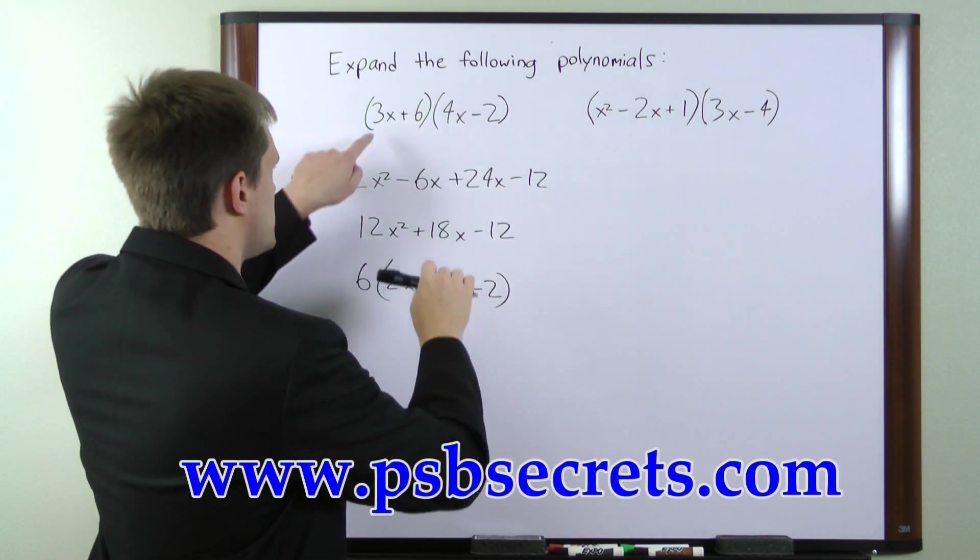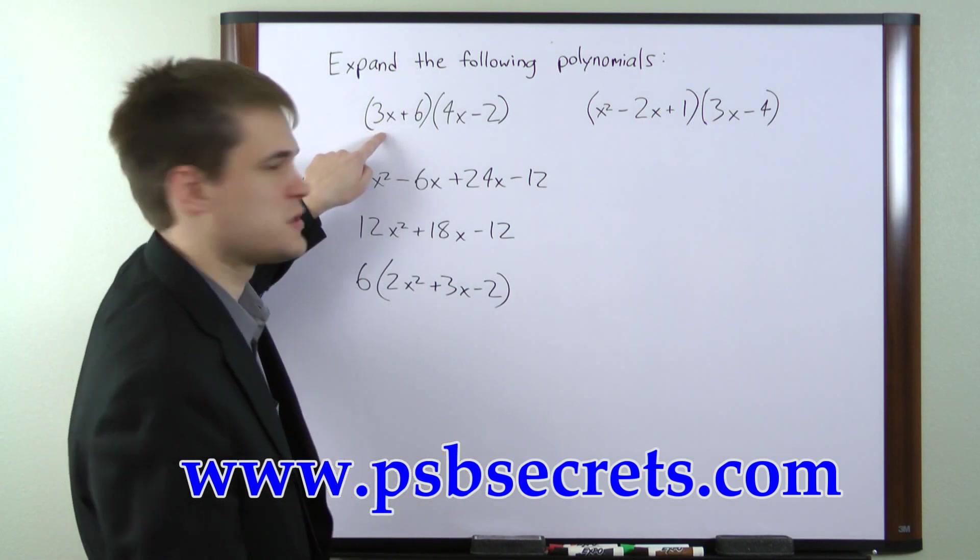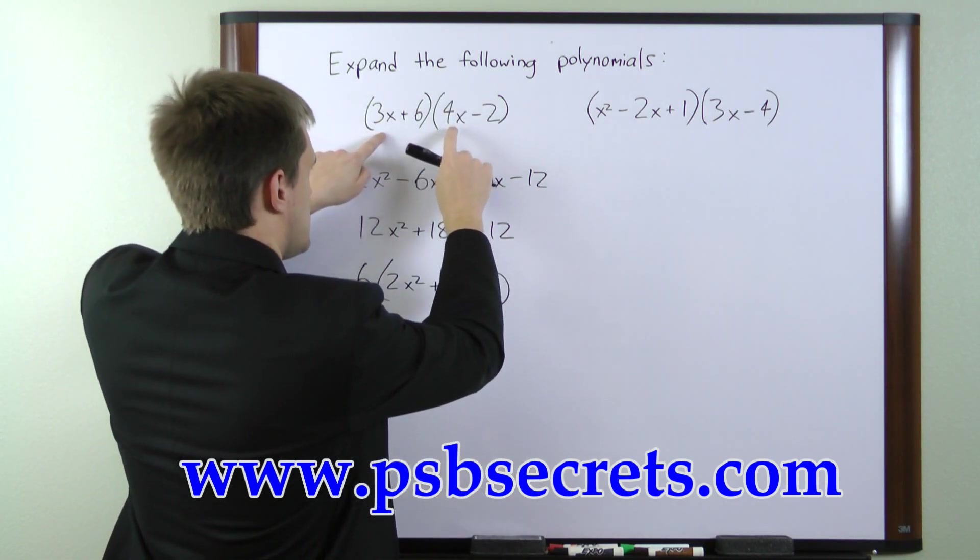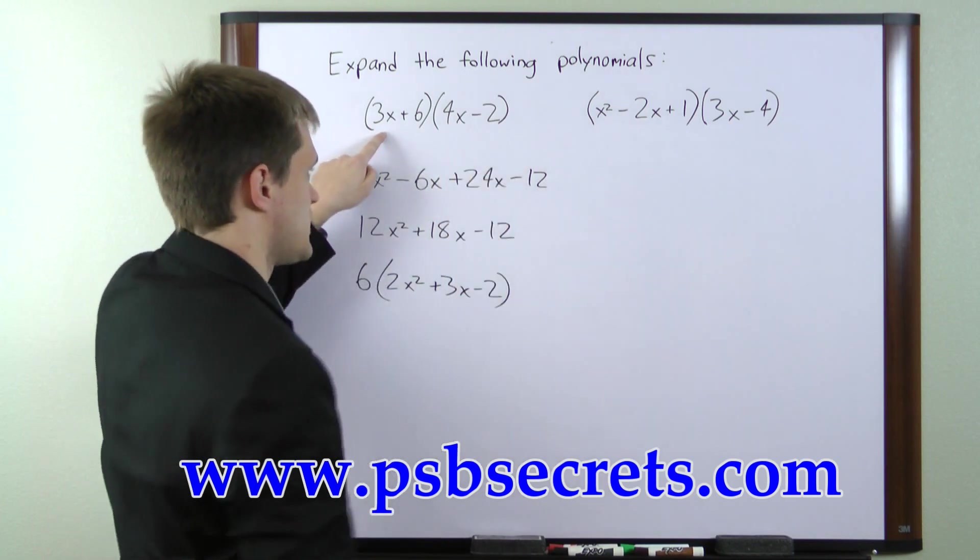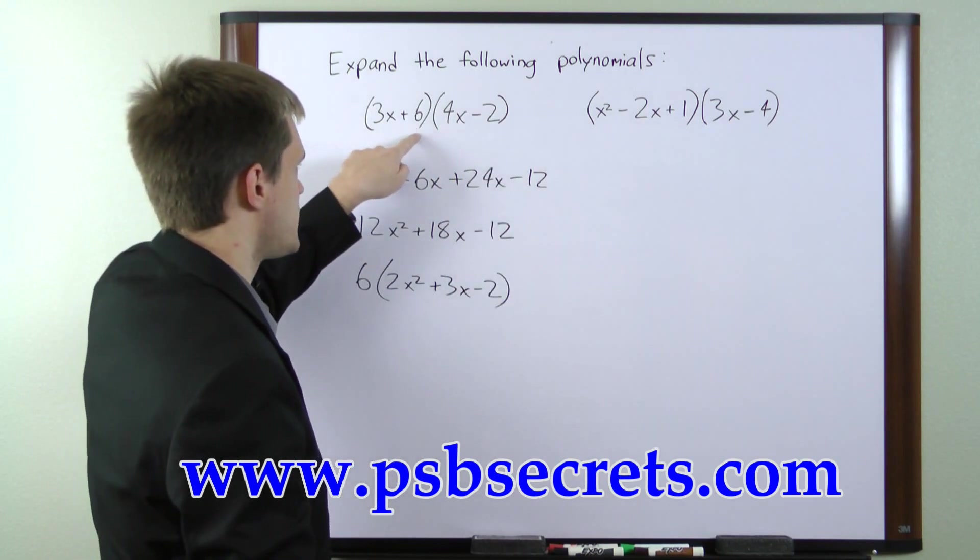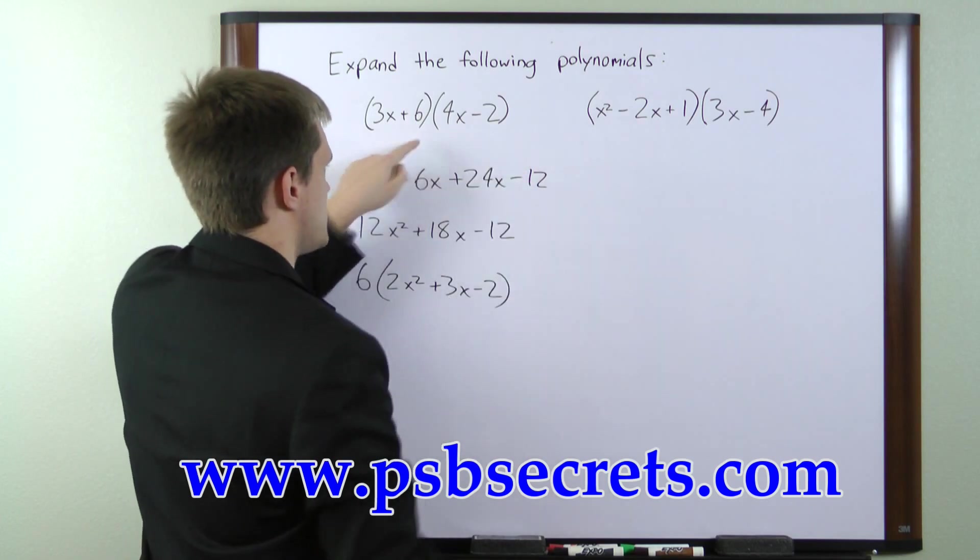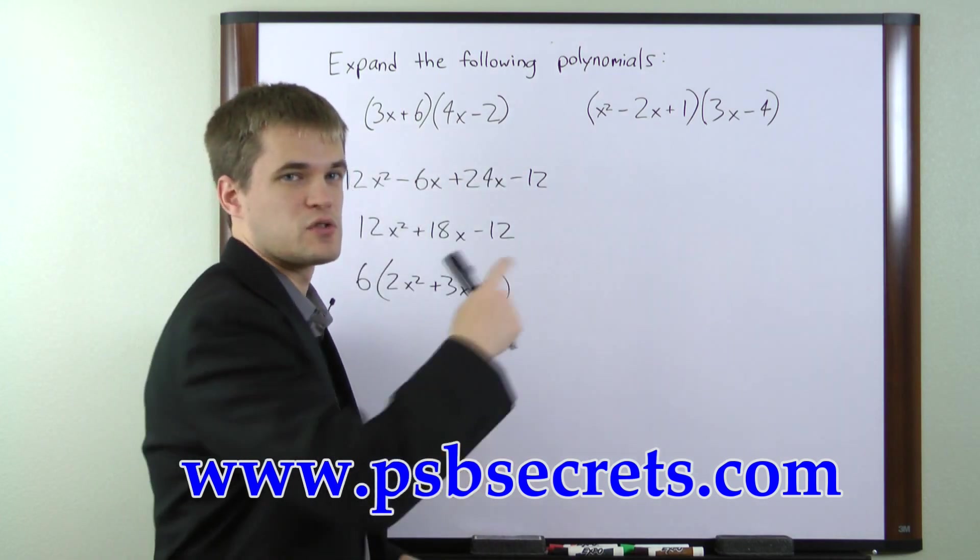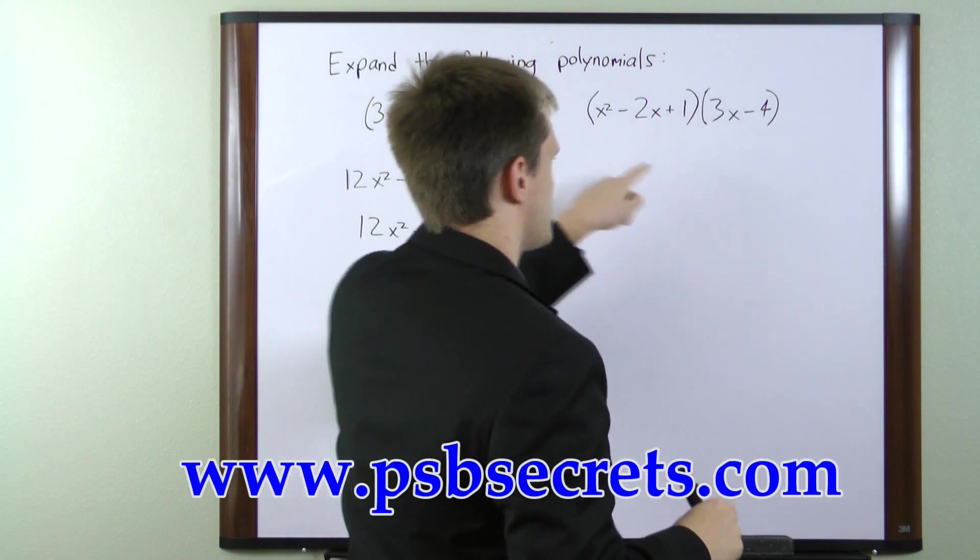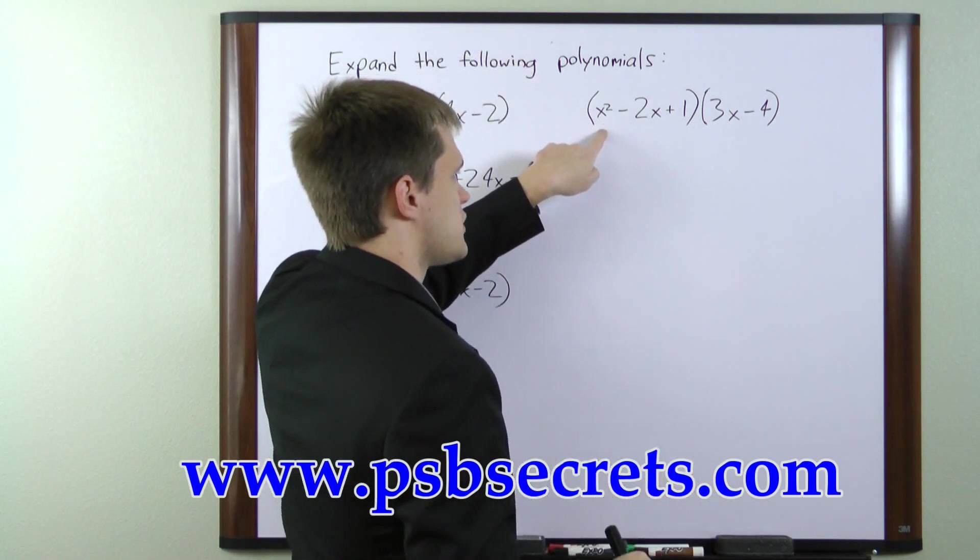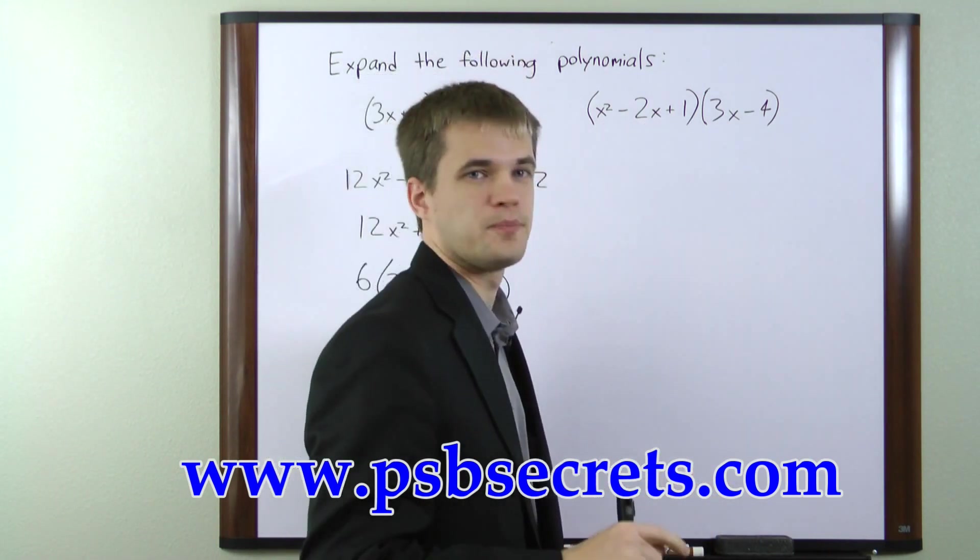The FOIL method takes the first term in the first expression and multiplies it in order by each of the terms in the second expression. Then moves on to the second term in the first expression and multiplies it by each of the terms in the second expression. So to extrapolate that to a 3-term expression, we'll start with the first term, move to the second term, and then move to the third term.